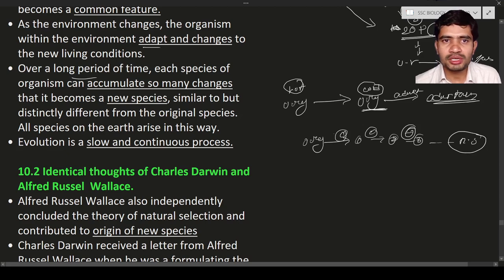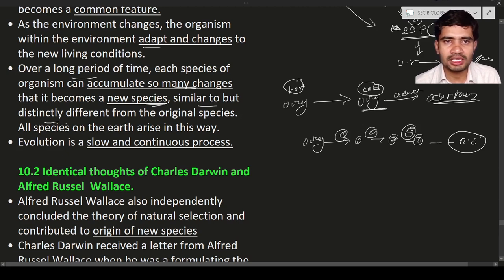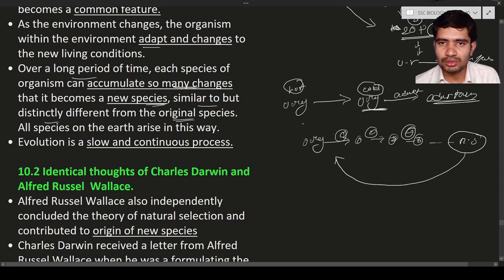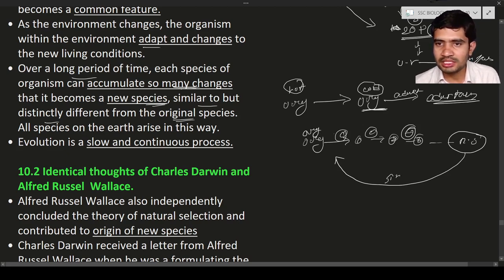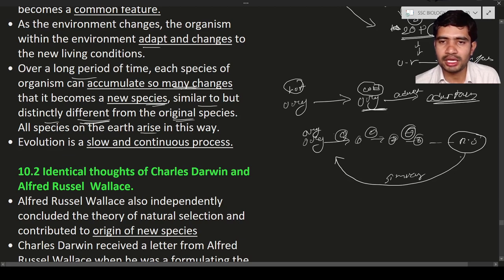A new species is formed due to the accumulation of changes over many generations. When you compare the new species to the original species, they are similar but distinctly different from the original species. All species on Earth arise in this way.